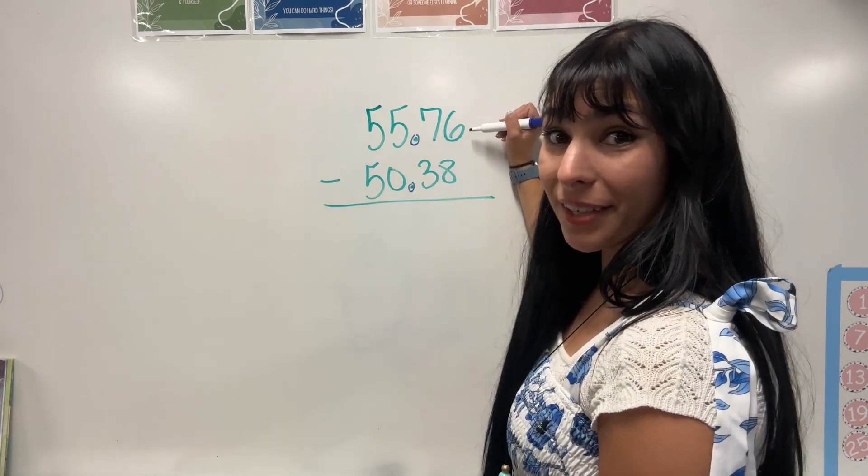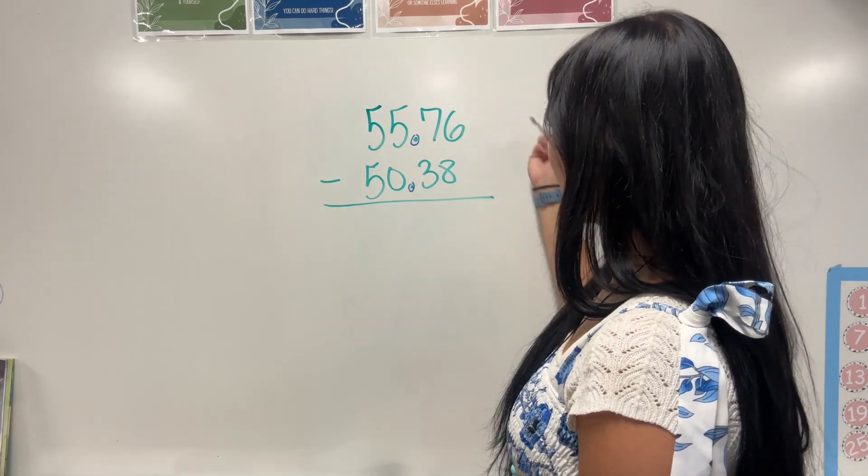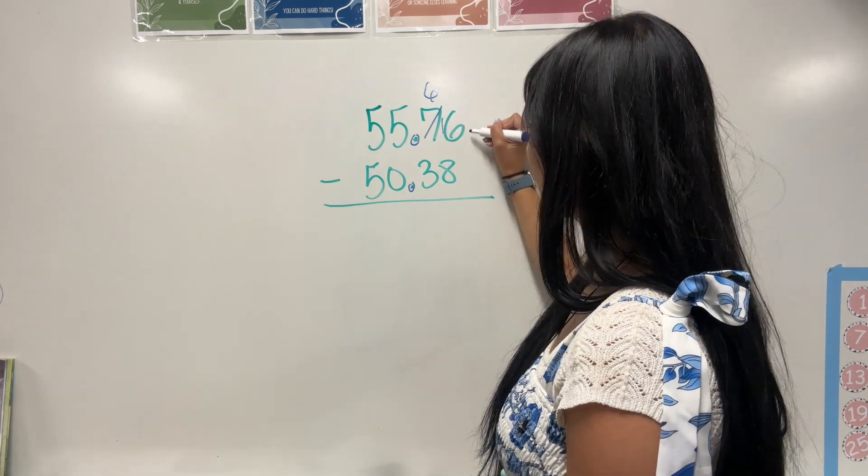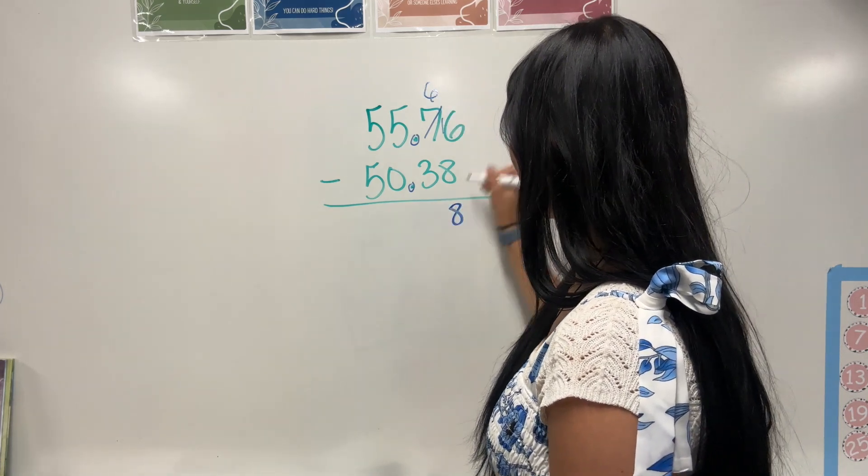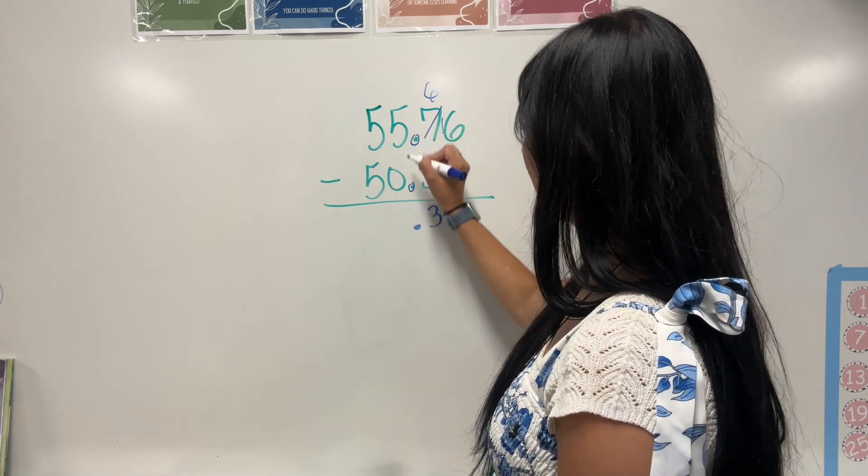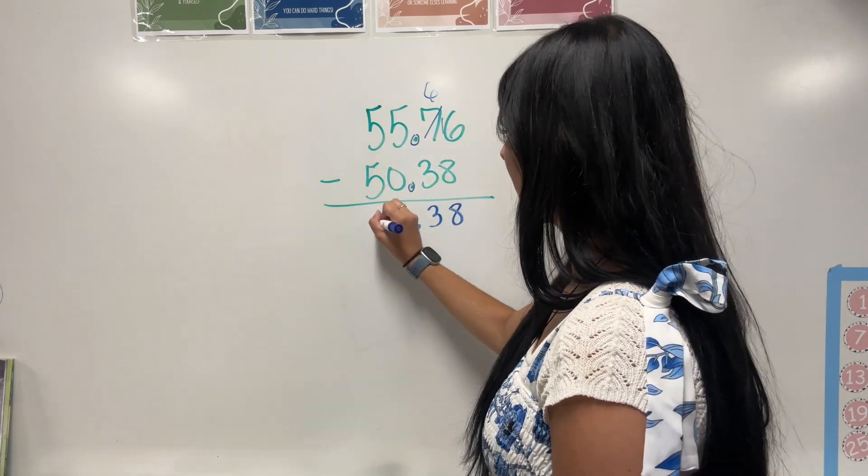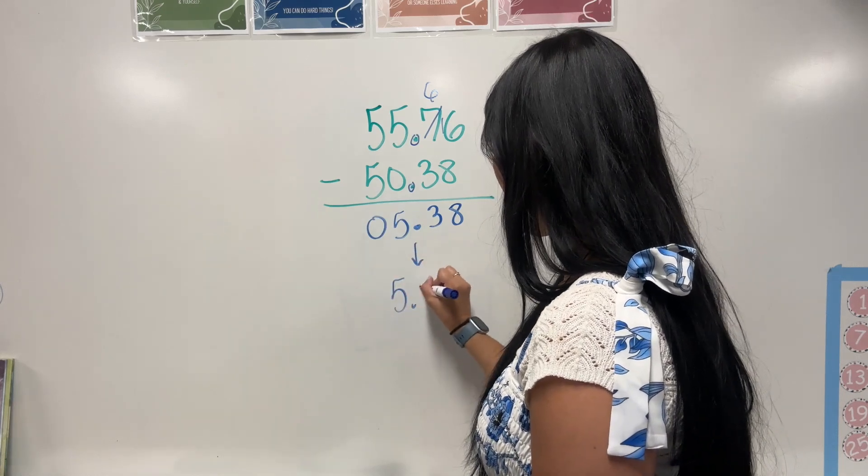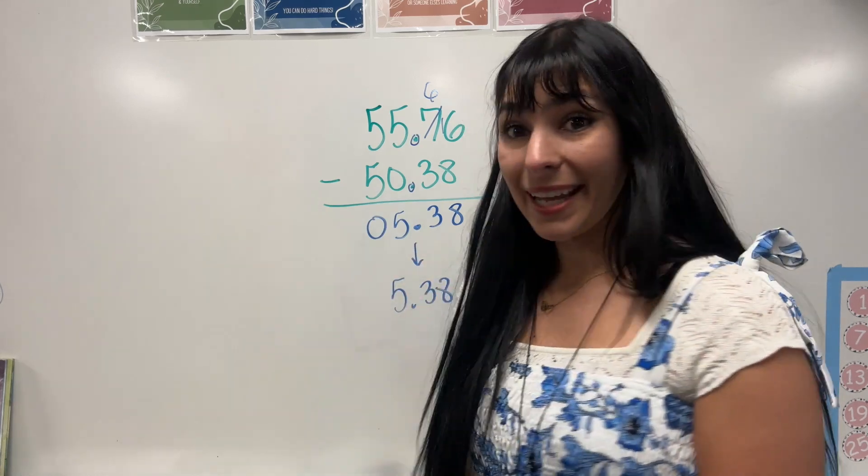So let's go ahead and subtract like normal. Six take away eight. Can't do it. I need to borrow. So that's going to be six. This is now 16. 16 take away eight is eight. Six take away three is three. Bringing that decimal down. Five take away zero is five. Five take away five is zero. So our answer is the difference is 5.38 inches.